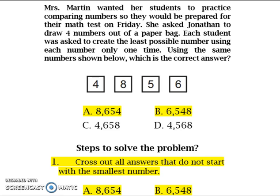Looking at our answer choices, we can immediately see that we can cross out A, 8,654 because 8 is not the smallest number. Also we can cross out B, 6,548 because 6 is not the smallest number.